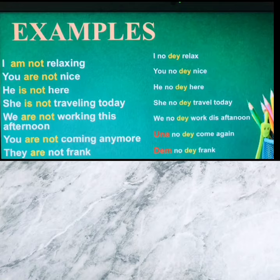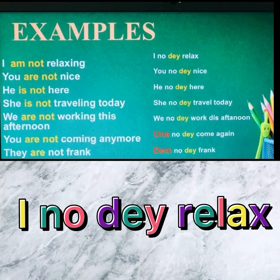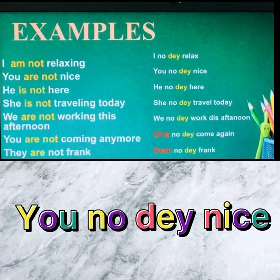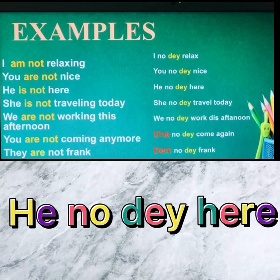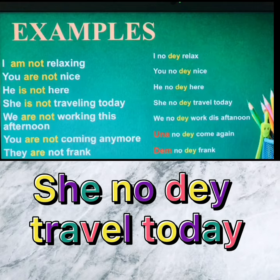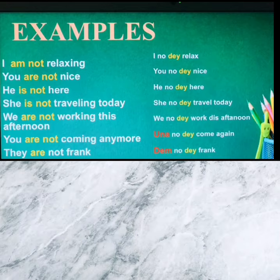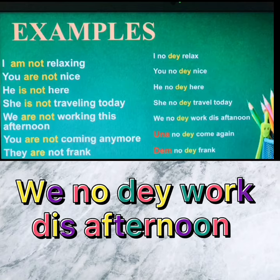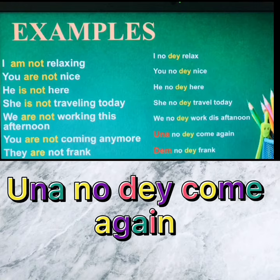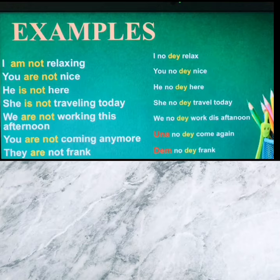Now let's see complete examples of the negative form in both languages. 'I am not relaxing' — 'I no dee relax.' 'You're not nice' — 'you no dee nice.' 'He's not here' — 'he no dee here.' 'She's not traveling today' — 'she no dee travel today.' 'We are not working this afternoon' — 'we no dee work this afternoon.' 'You guys are not coming anymore' — 'una no dee come again.' 'They are not frank' — 'den no dee frank.'